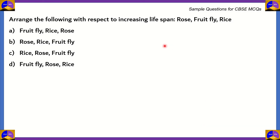Our first question is from biology. As we've said, this is from the chapter Reproduction in Organisms. Arrange the following with respect to increasing lifespan: rose, fruit fly, rice. Which of the options here are correct — is it A, B, C, or D?